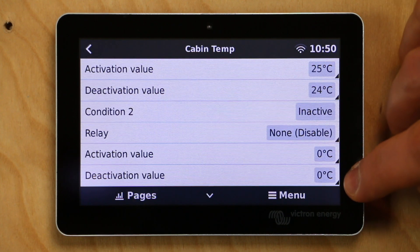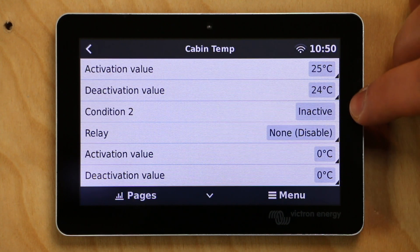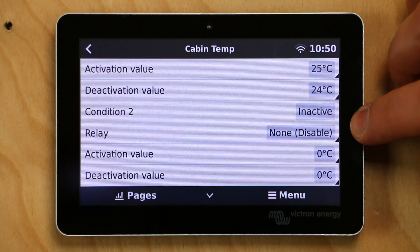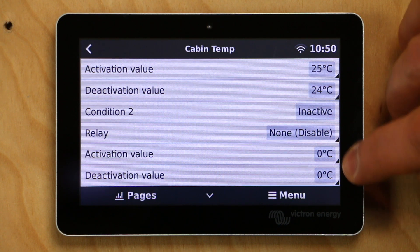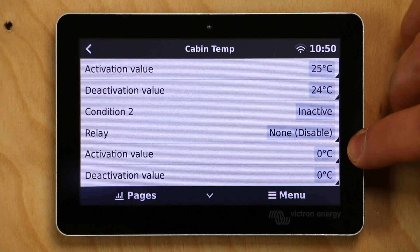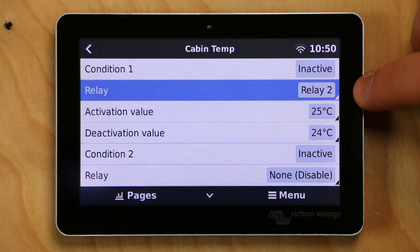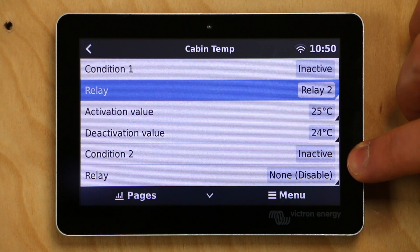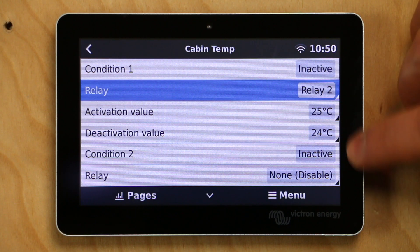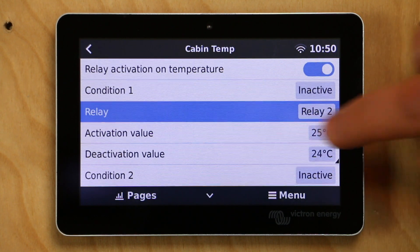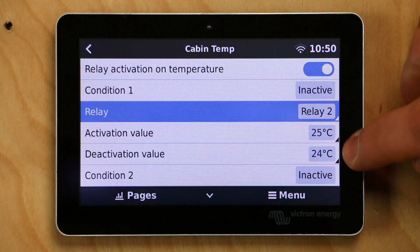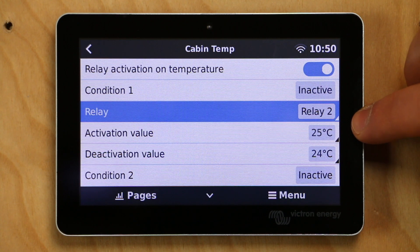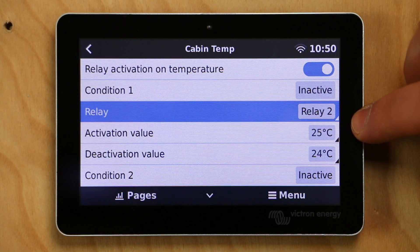And you can see I can set additional conditions for that Ruuvi tag. Let's say that I wanted the Ruuvi tag to also control relay one. I could select relay one here and I could select additional temperature parameters. So what this might look like is relay two could control a heater at cold temperatures and relay one could control a fan at high temperatures. So there's all sorts of things that you could set up with this. But to turn our light on and off, all I did was select relay two and I gave it these two temperature parameters. So that's how you control a relay using a Ruuvi tag and the Cerbo GX.